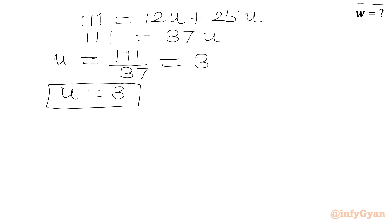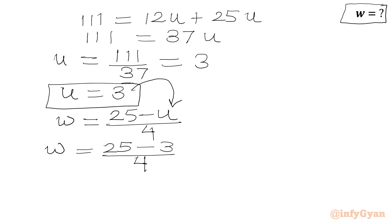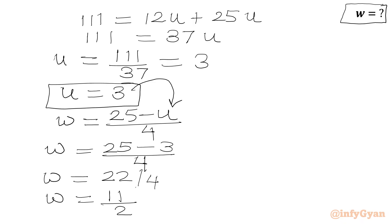Our target expression is w. We have w in terms of u as w equal to (25 minus u) over 4. Plugging in u equal to 3, we get w equal to (25 minus 3) over 4, which is 22 over 4. Since both numbers are divisible by 2, w equals 11 over 2, or 5.5 in decimals. So w equal to 11 over 2 is our answer.